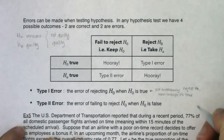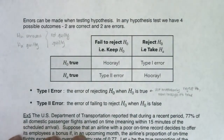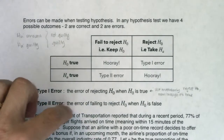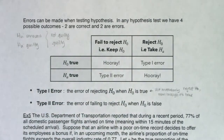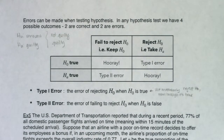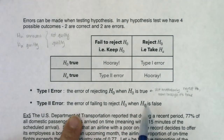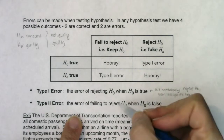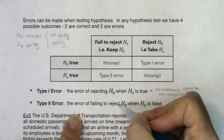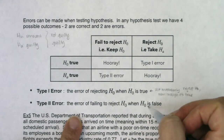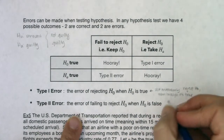The Type 2 error is the error of failing to reject the null when it's false. It sounds convoluted to say out loud — failing to reject the null when it's false. The null is false, we should have gotten rid of it, but we didn't. We should have rejected the null but we didn't.